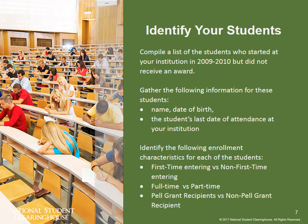The first thing you're going to want to do is identify the students. Compile a file with the students who started at your institution in 2009-2010 but did not receive an award. Gather the following information for these students: name, date of birth, and the student's last date of attendance at your institution. Then identify the following enrollment characteristics for each student: first-time entering versus non-first-time entering, full-time versus part-time, and Pell Grant recipients versus non-Pell Grant recipients. You will need these numbers in your IPEDS survey.